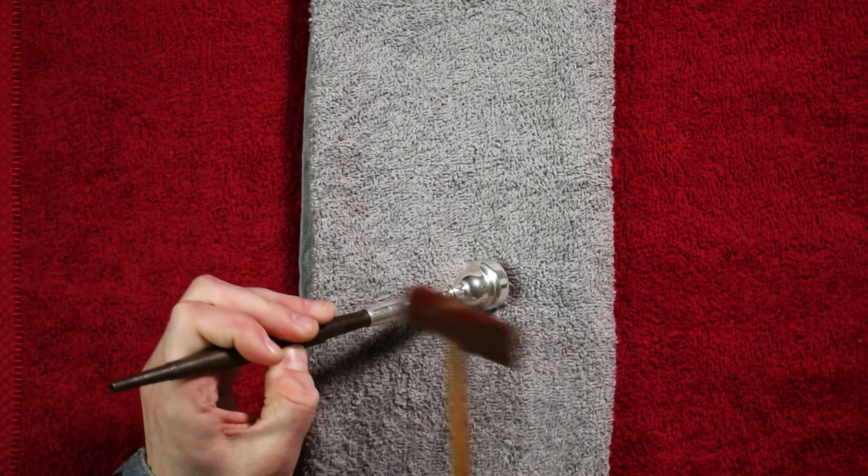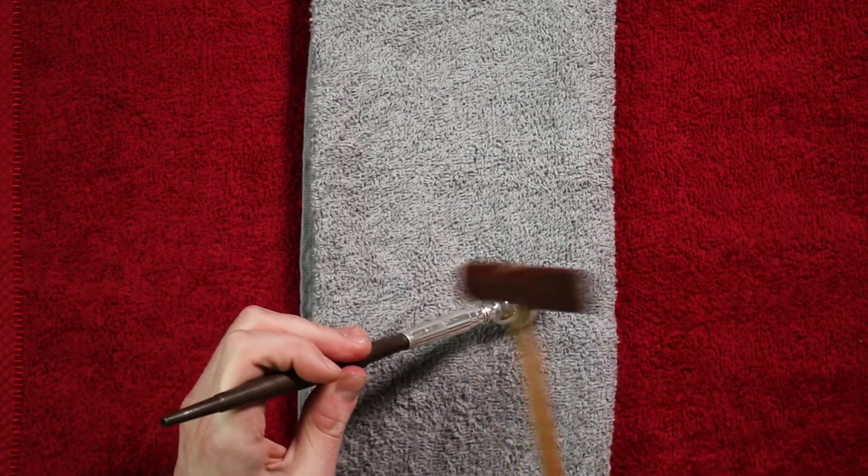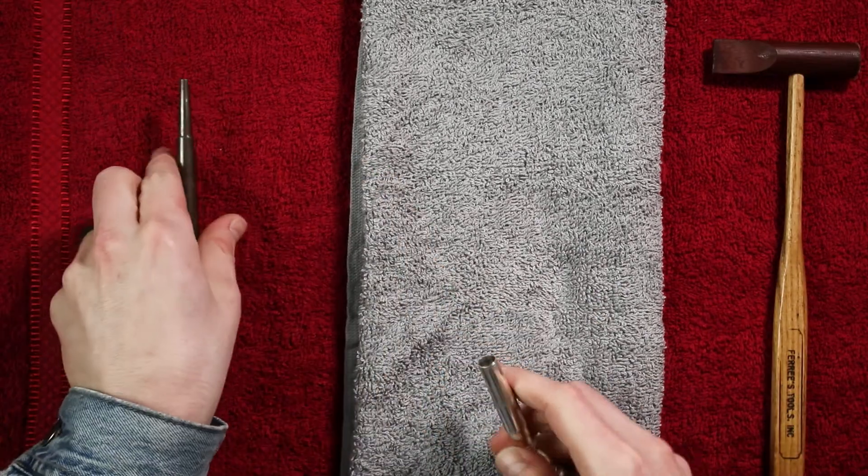Once this happens, replace the mouthpiece back onto the truing tool and hand-tighten it again, repeating this process until the end of your mouthpiece is back to its original round shape.